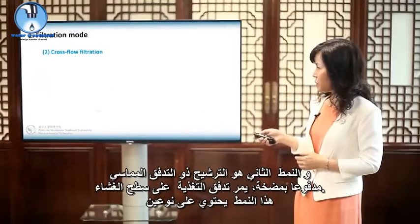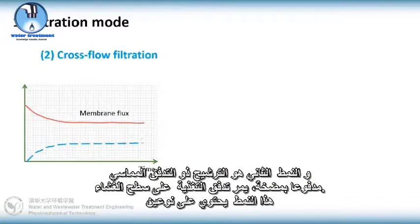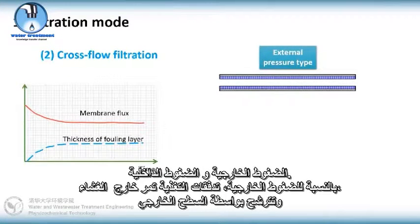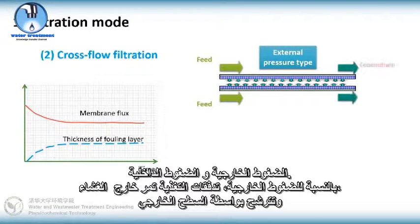The second mode is cross-flow filtration. Propelled by a pump, the feed flows on the membrane surface. Such mode contains two types, external pressure and internal pressure types.